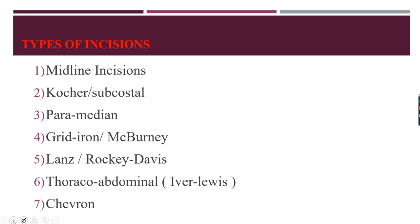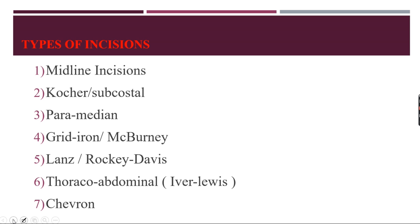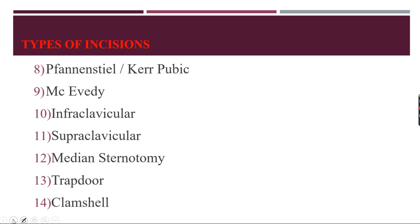Just to quickly go through the names of various types of named incisions: the midline incisions, Kocher or subcostal incision, paramedian, gridiron or McBurney's in the right iliac fossa, then Lanz and Rocky Davis also in the right iliac fossa, the thoracoabdominal or Ivor Lewis incision, chevron incision, Pfannenstiel or Kerby-Vic incision, McEvedy, infraclavicular, supraclavicular.